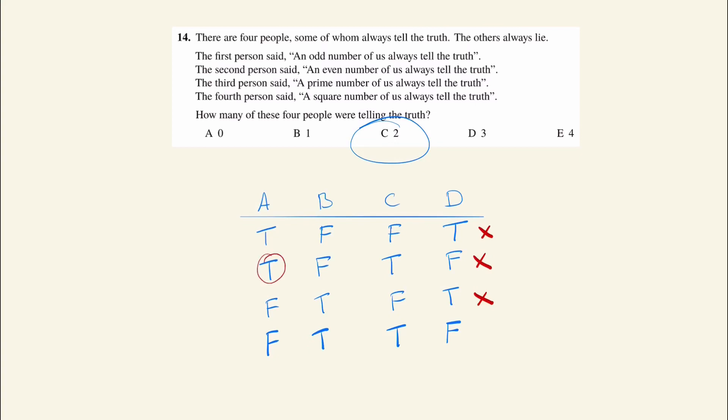So this case where A is telling the truth must be wrong, and we're left with the final case: false, true, true, false. The first person saying an odd number, that works. The second person saying an even number, that works. The third person saying a prime number, that works. And the last person saying a square number, that also works as false. So the answer is correct.